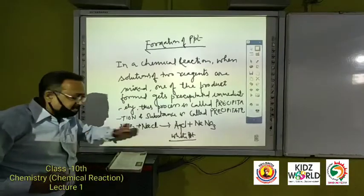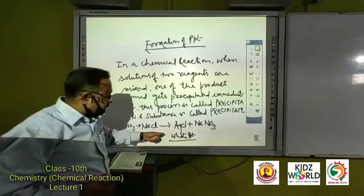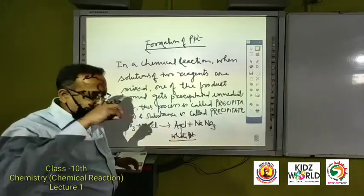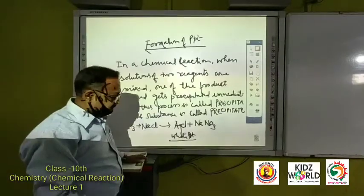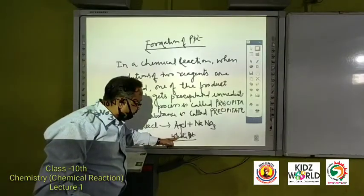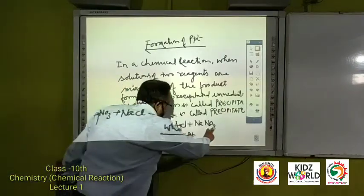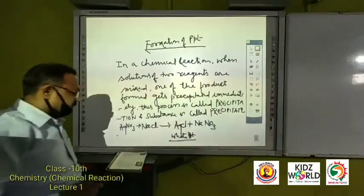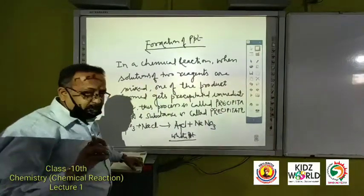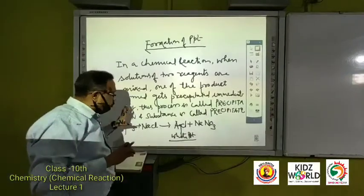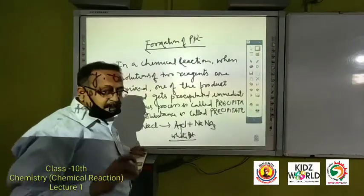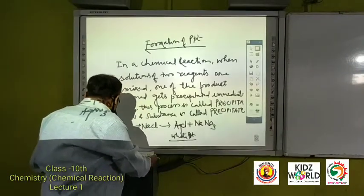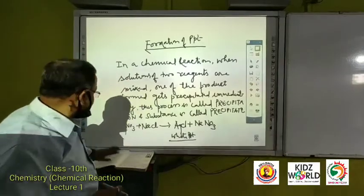Here, AgNO3 plus NaCl gives AgCl plus NaNO3. This silver chloride has tendency to settle down immediately. So this AgCl will be called precipitate and the whole process will be called precipitation. So when a chemical reaction takes place, precipitation is one of the important characteristics of this chemical reaction.